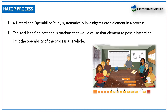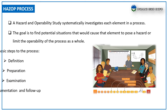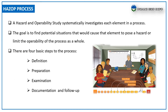The HAZOP study process systematically investigates each element in a process. The goal is to find potential situations that would cause that element to pose a hazard or limit the operability of the process as a whole. There are four basic steps: definition, preparation, examination, and documentation and follow-up.